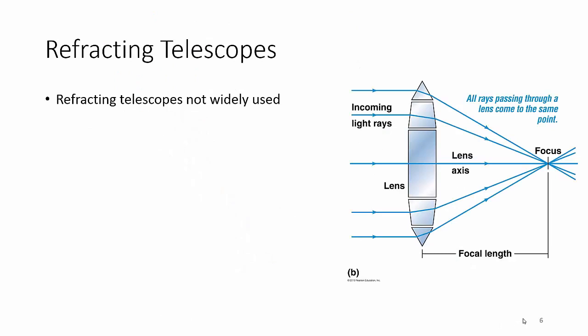Refracting telescopes are no longer widely used mainly because the lens can absorb some of the light. This is a big problem if you're talking UV light or infrared—it'll absorb light and not let it through, so therefore you can't collect it.